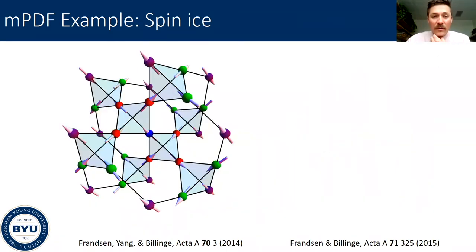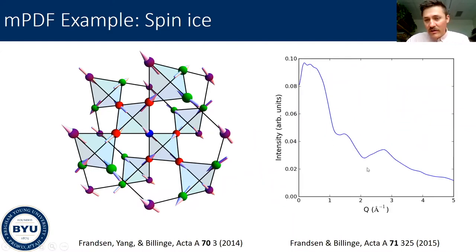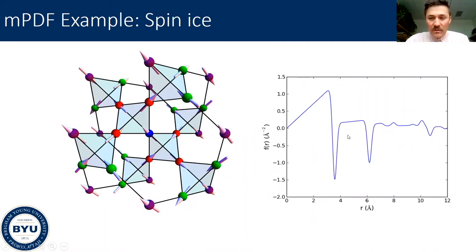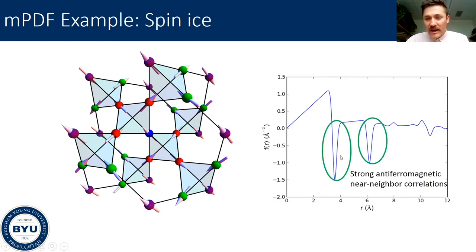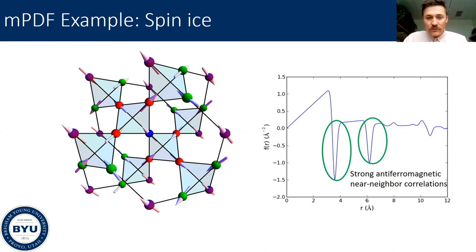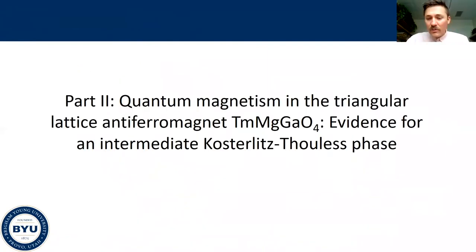Going back to the spin ice example, which yields a complex diffuse scattering pattern, if we instead look at the real-space magnetic PDF of a spin ice, we have sharper, more well-defined features in real space. We can look at specific peaks and relate those to specific distances between pairs of spins and figure out information about the local magnetic correlations just by looking at the magnetic PDF in real space. This is the motivation and advantage of using the magnetic pair distribution function to understand short-range magnetic correlations.